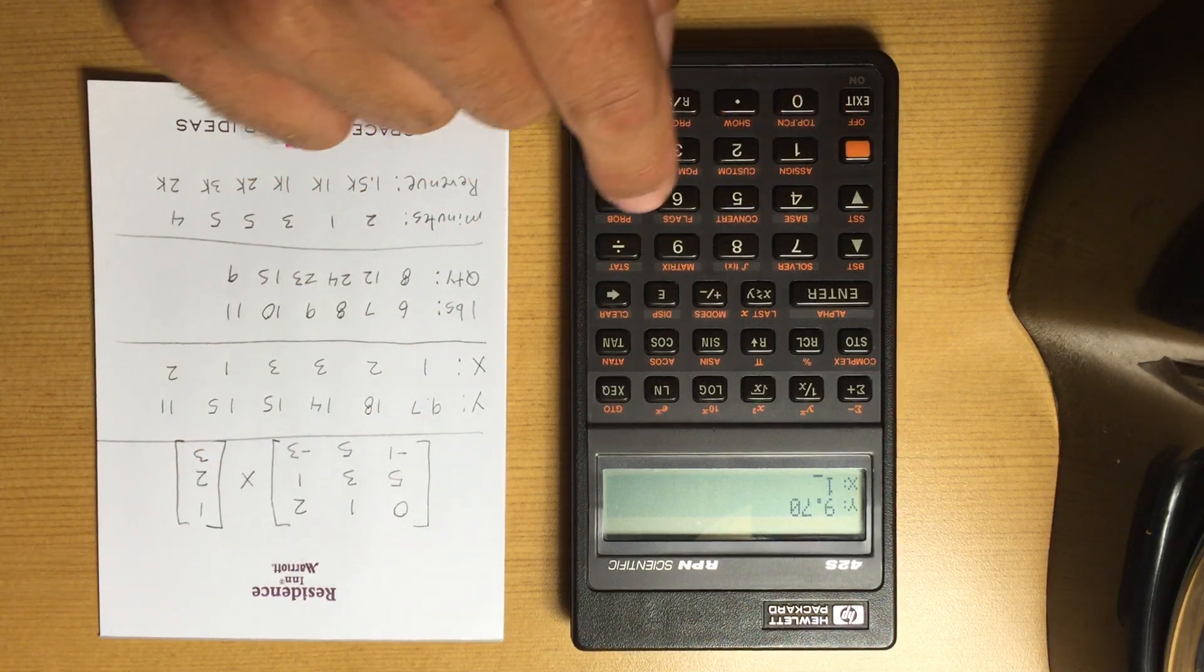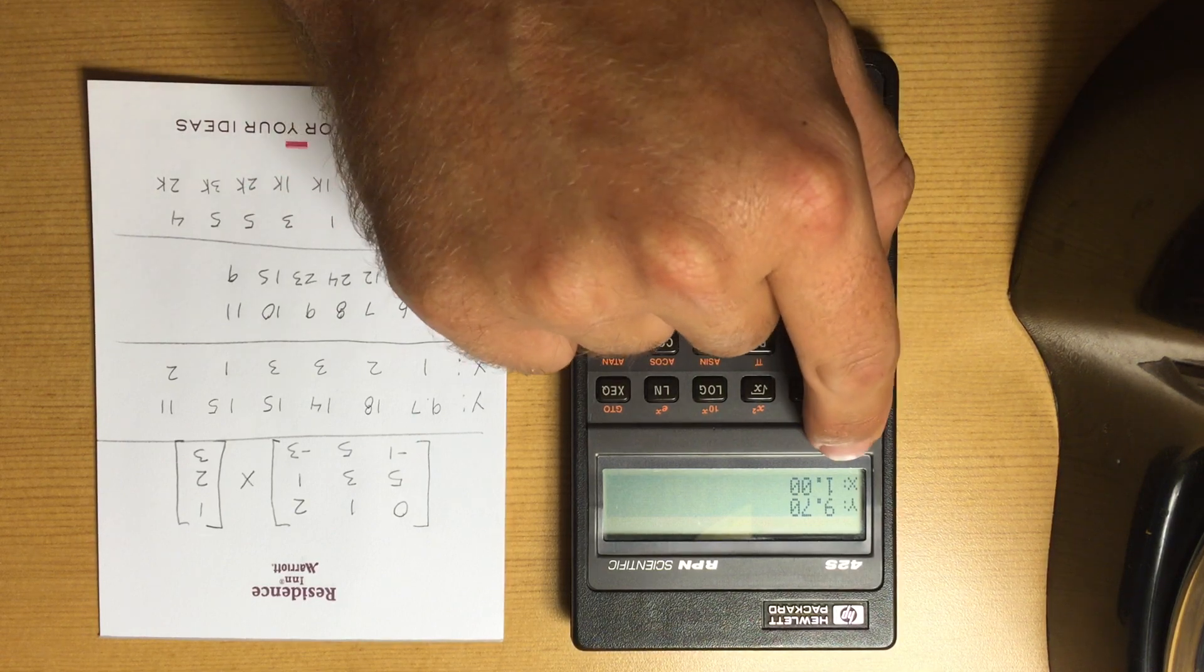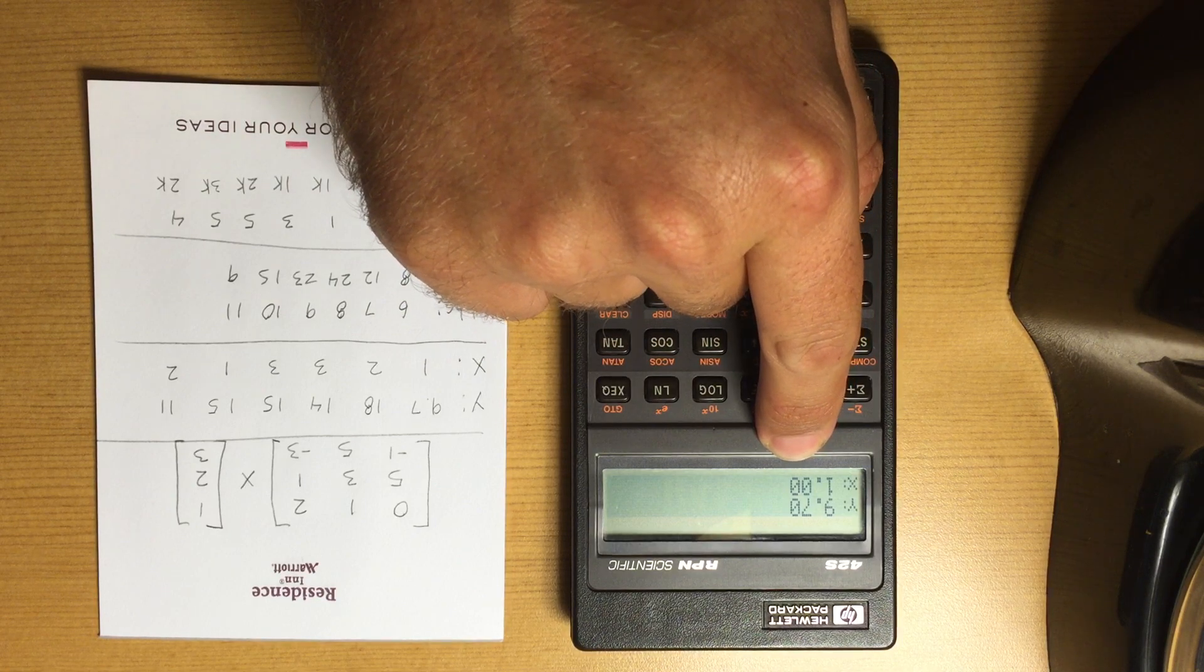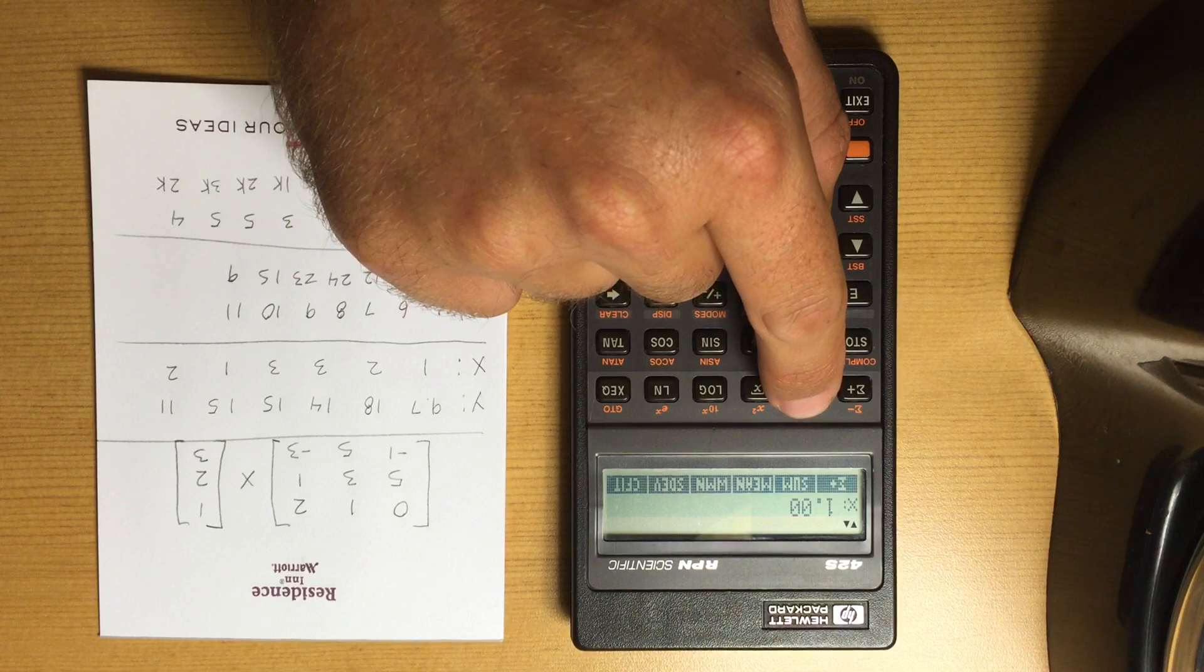Whatever this data represents, let's say it's 9.7 and 1. Now I'm going to enter it into my register and that shows me I have one piece of information. If I go to my stat menu and look at the sum, my X value is 1 and my Y value is 9.7.